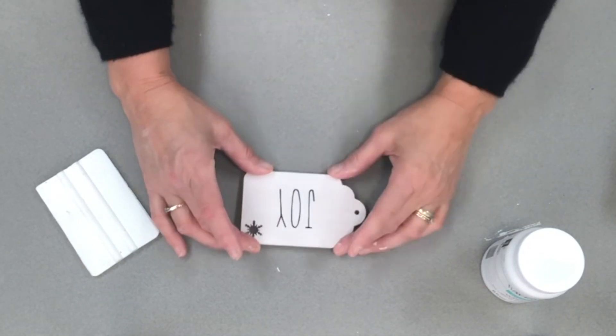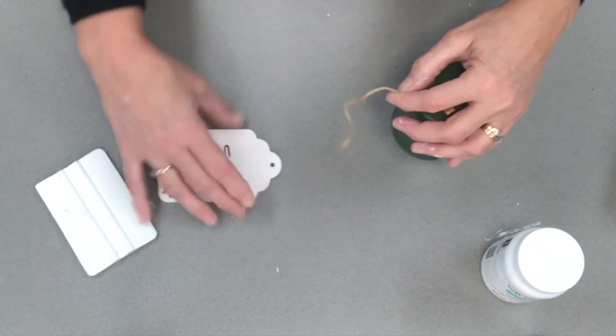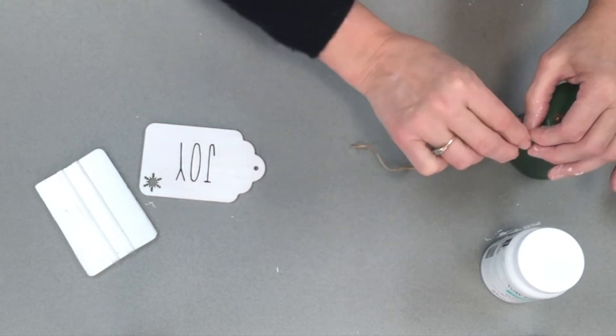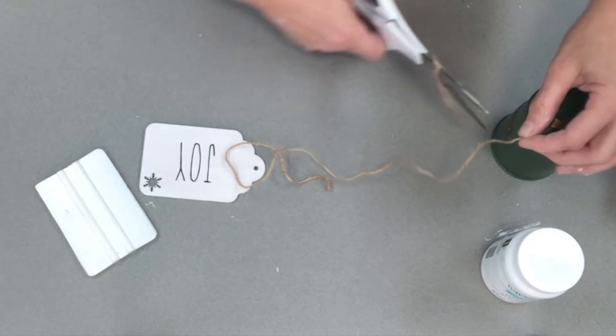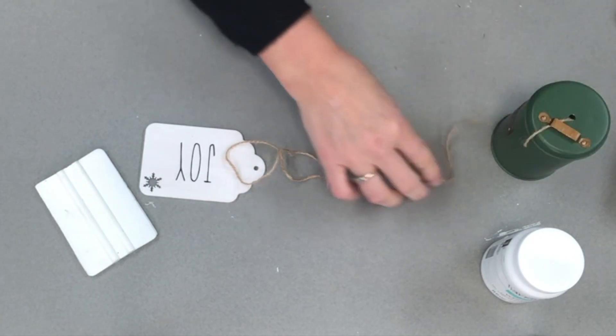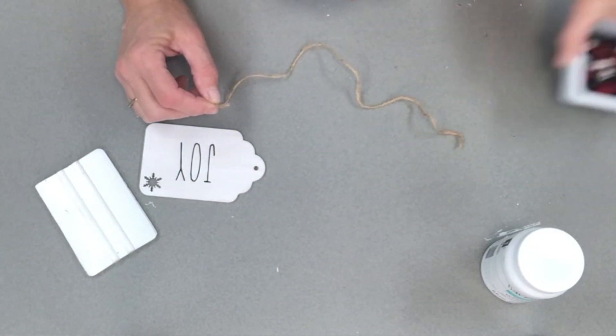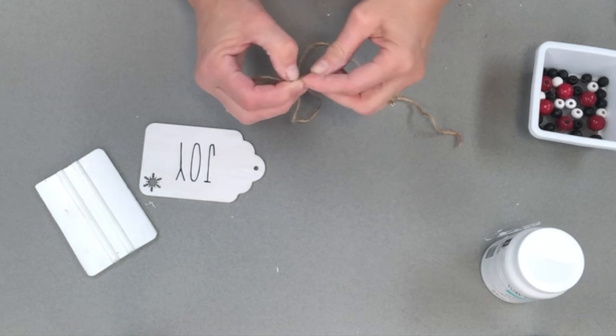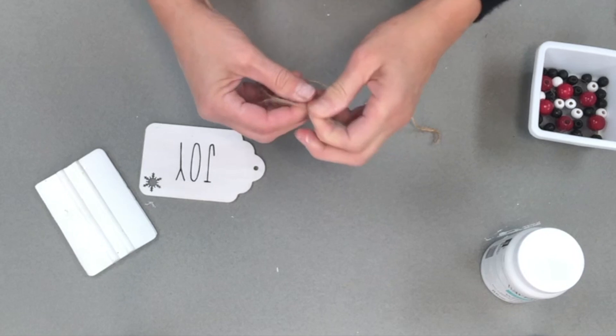Now we're going to grab some twine and I like to just figure out how long I want it to be and then I'm going to actually double that because we are going to use a darning needle. Actually you wouldn't necessarily have to do it, but I find that it works really nice to be able to get your beads through.